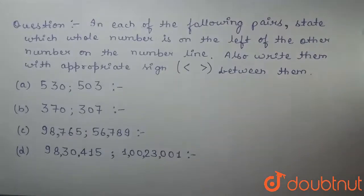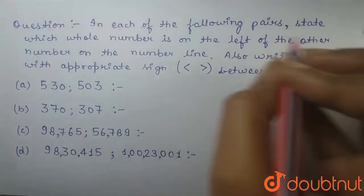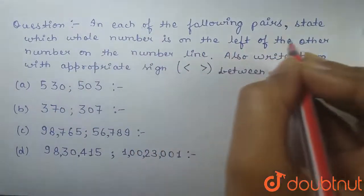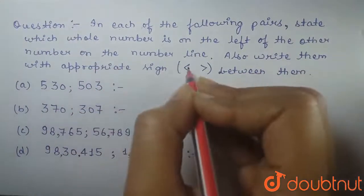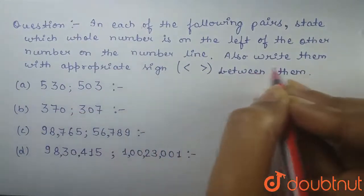In this question, in each of the following pairs, state which whole number is on the left of the other number on the number line. Also write them with appropriate sign, greater than or less than, between them.